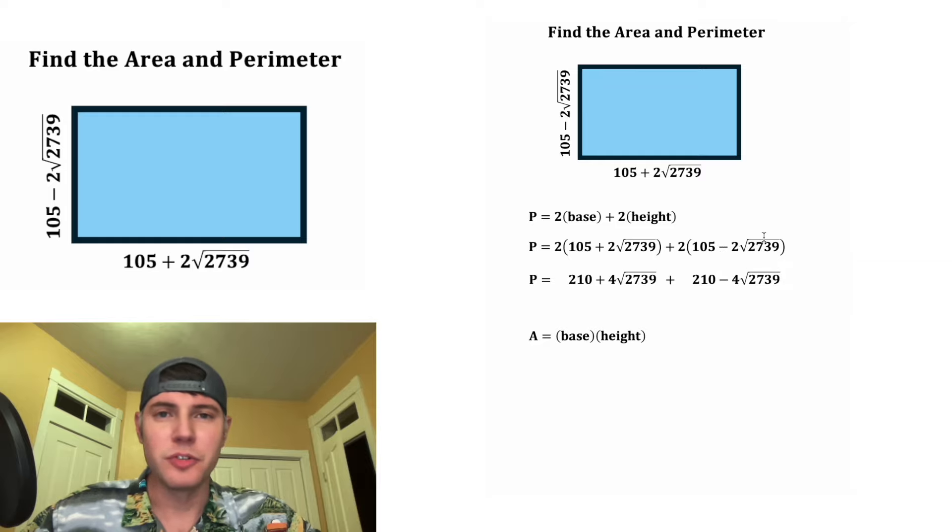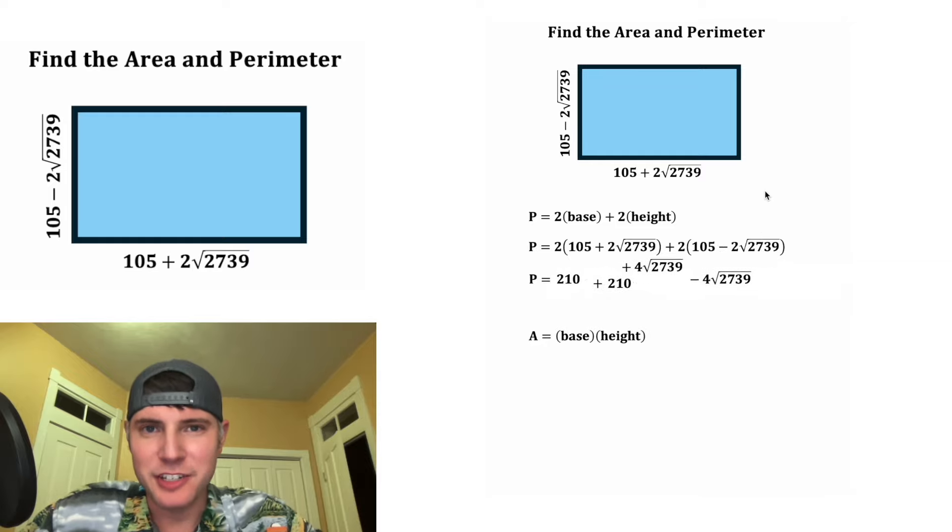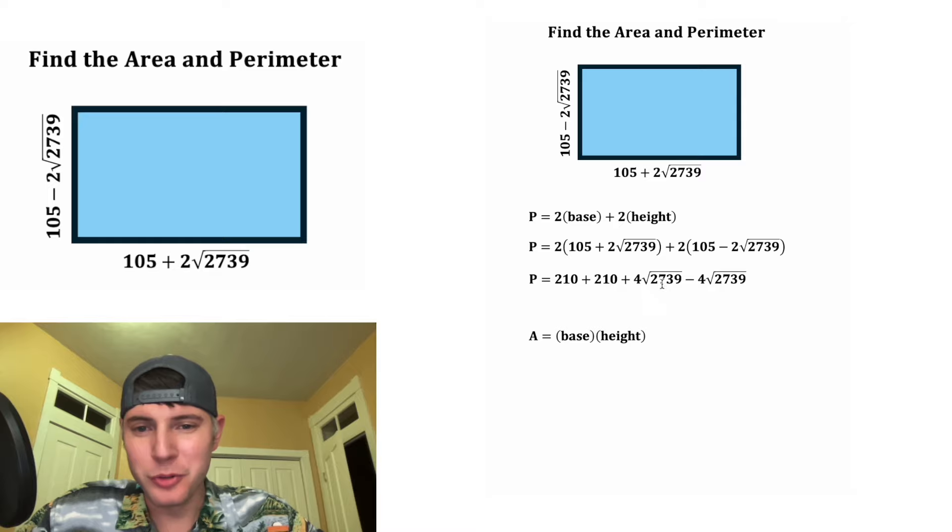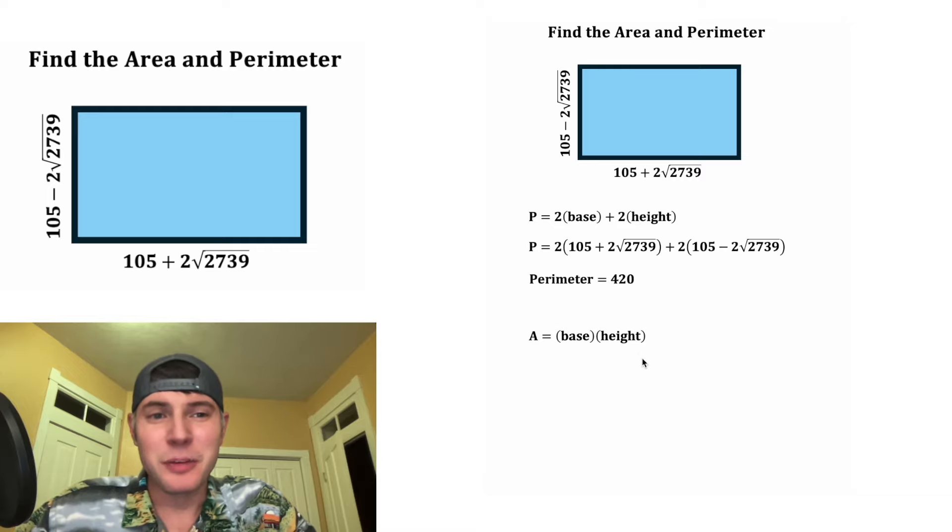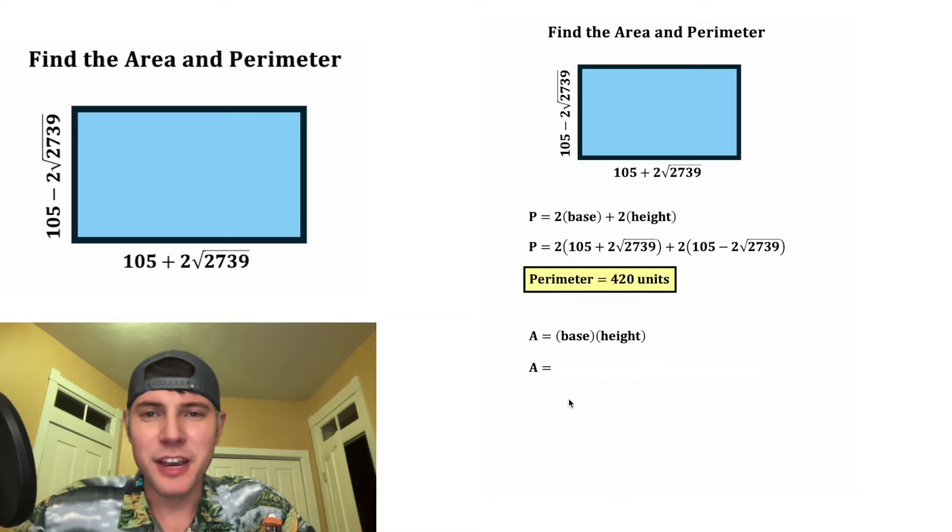Then let's combine like terms. We have a positive 4√2739 and negative 4√2739—these cancel each other out. And 210 plus 210 is 420. So we found the perimeter is 420 units. This looks important, let's put a box around it.